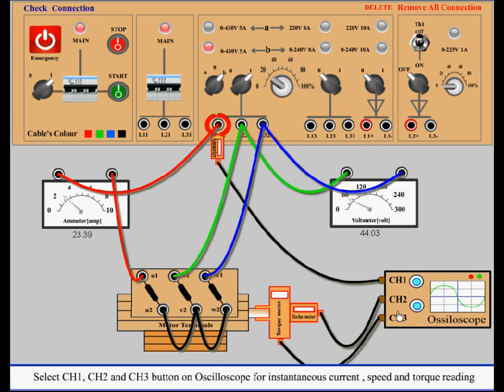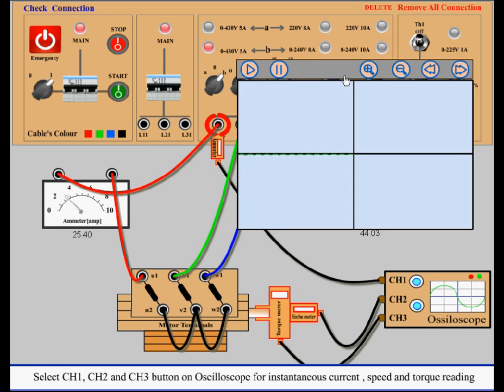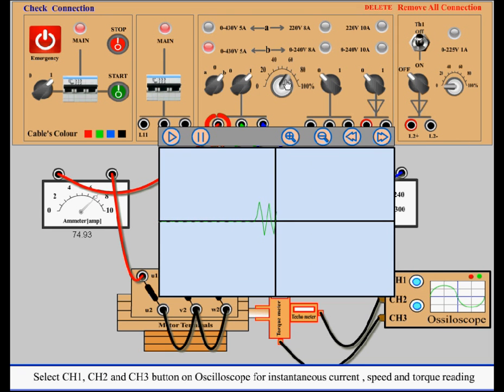Select CH1, CH2, and CH3 button on oscilloscope for instantaneous current, speed, and torque reading.